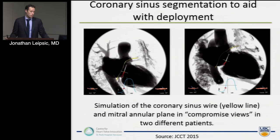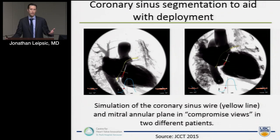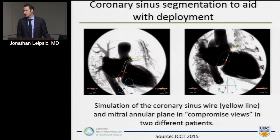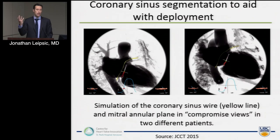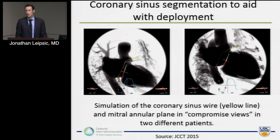When we first saw these procedures being done, John Webb was putting in a coronary sinus wire. He said it was a fluoroscopic landmark to the mitral annulus. We went back to our CTs and realized the coronary sinus has an inconsistent relationship to the P2 posterior mitral valve annulus — sure, it's posterior to it, but in some people it's within five millimeters, in others it's three centimeters. By segmenting the coronary sinus and projecting it on the monitor in the hybrid OR when they put in the coronary sinus wire, they understand where that wire should be in relation to the mitral annulus for that individual patient, rather than assuming a consistent position across all patients — which is a flawed assumption.